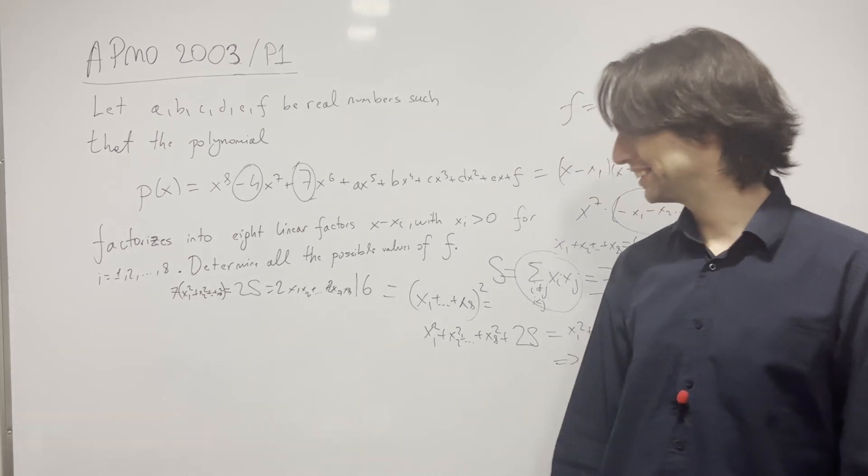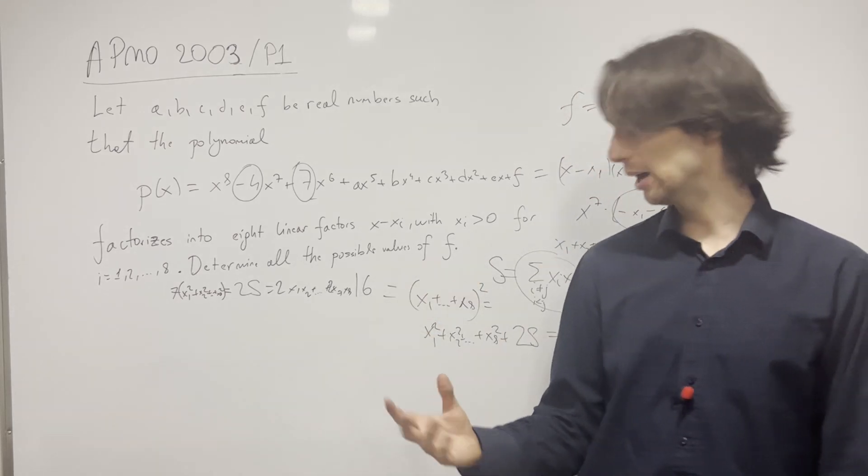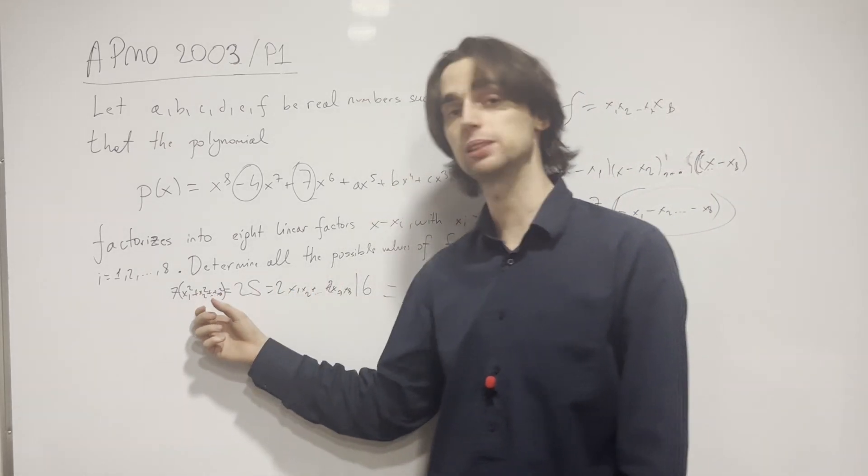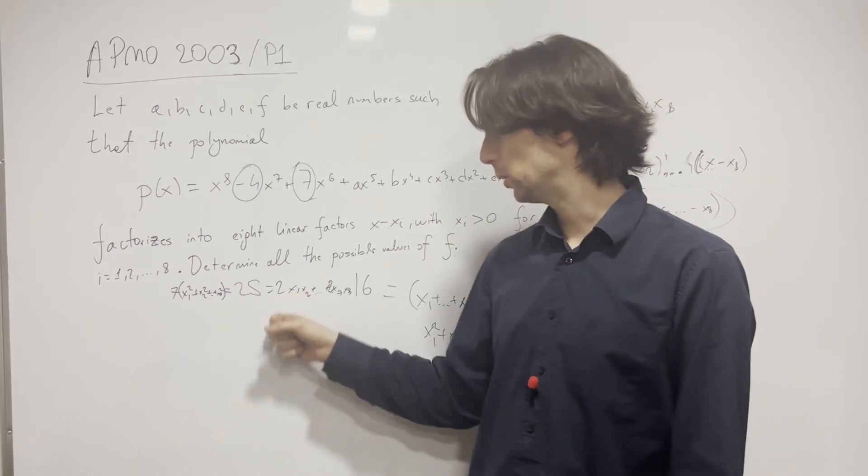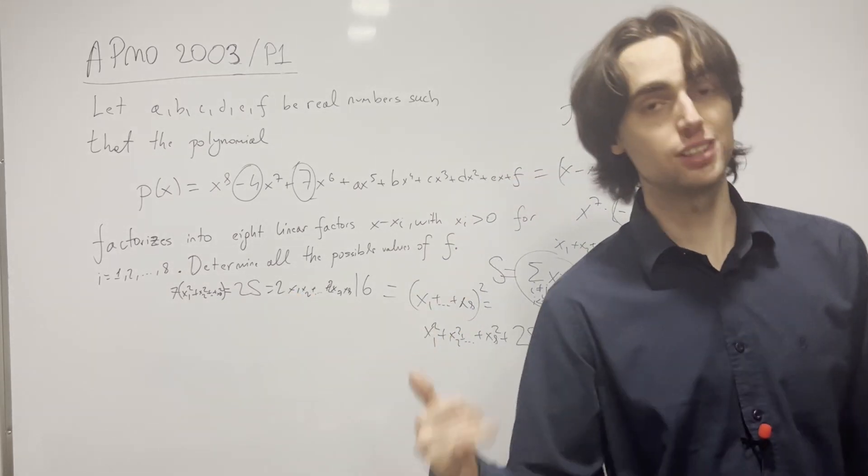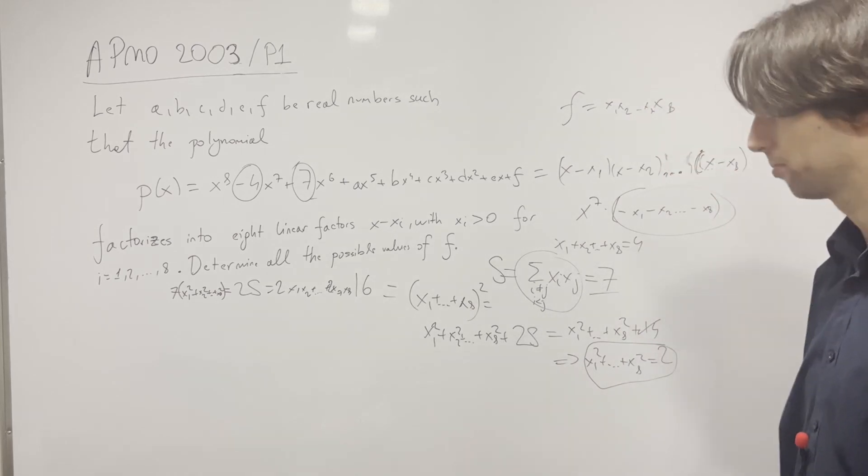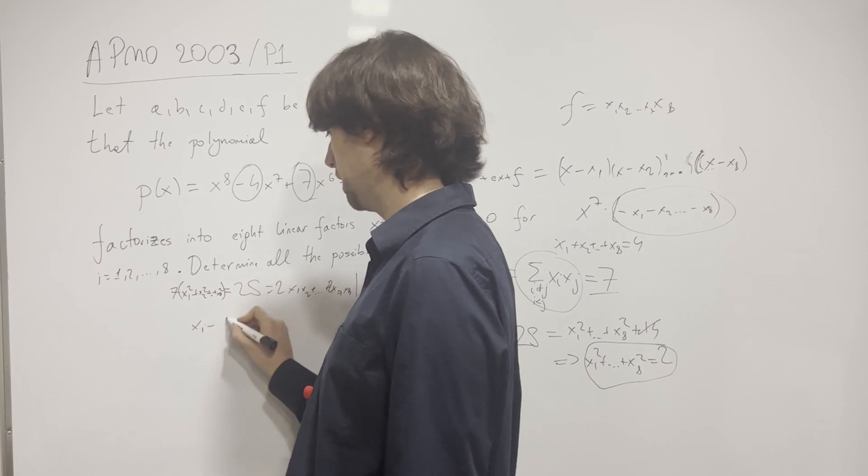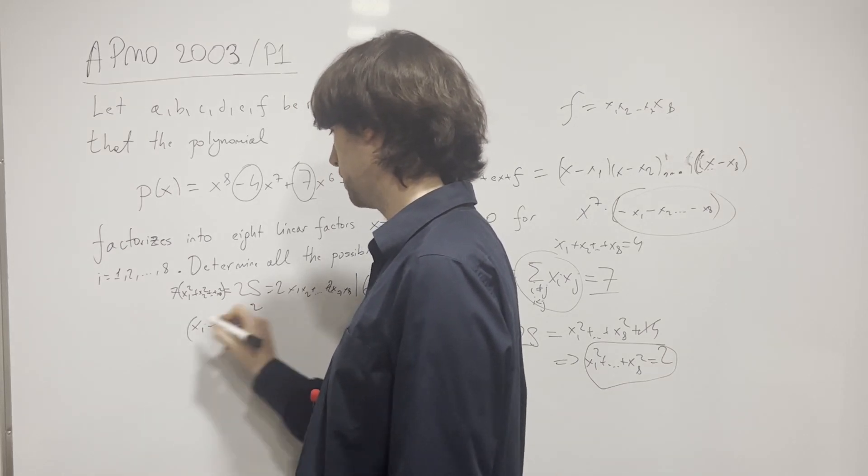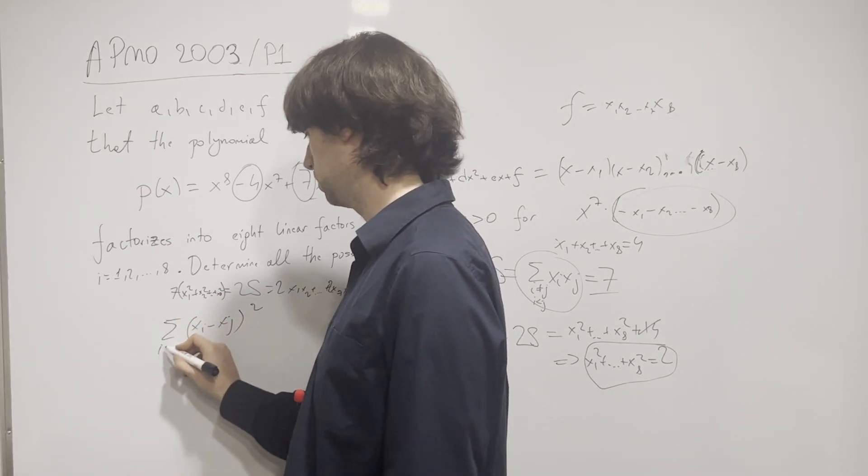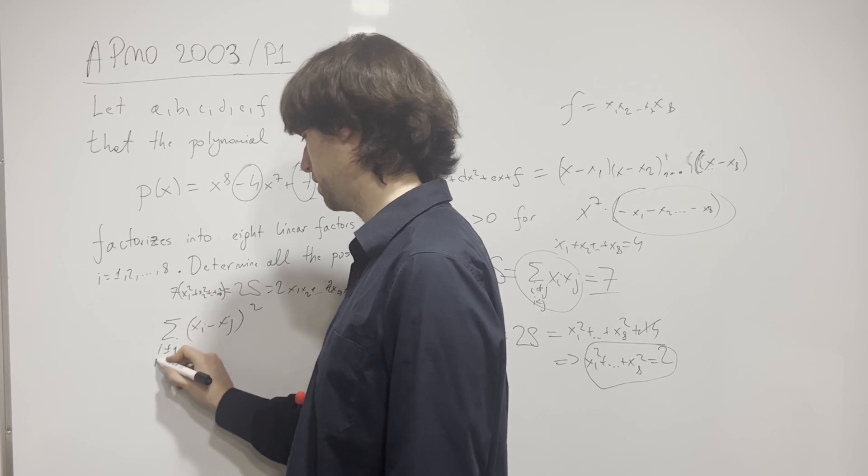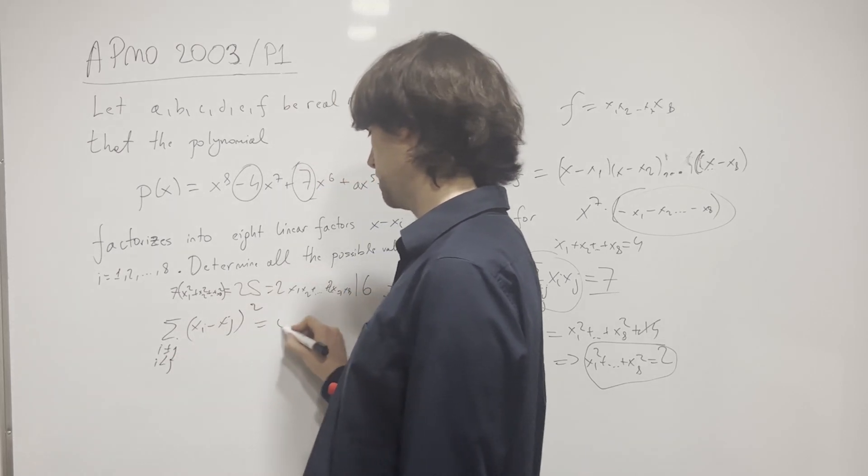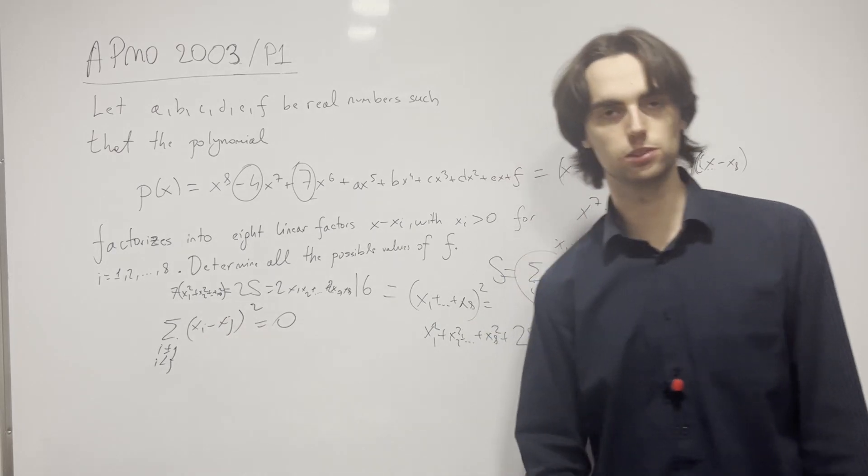The answer is this is really like an inequality now. You have the same number of terms—7 times 8 here, and 2 times 8 choose 2, which is 7 times 8. So you can actually factor this as the sum of (xi - xj)^2 for i < j. This sum of squares equals 0.